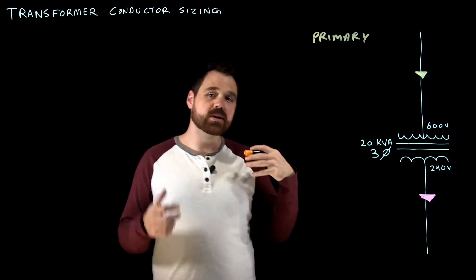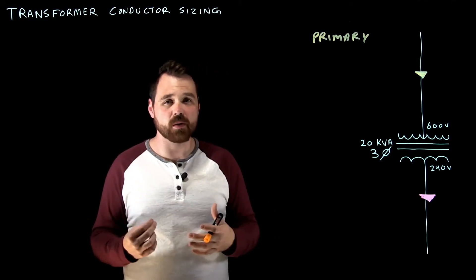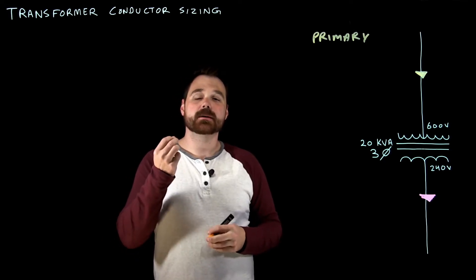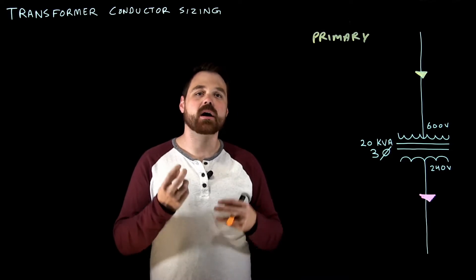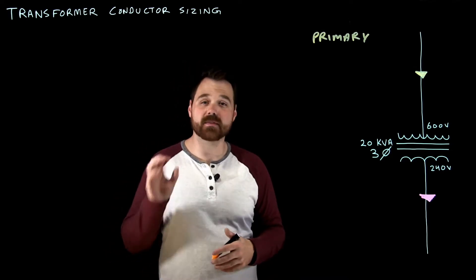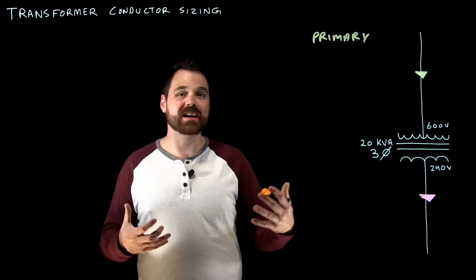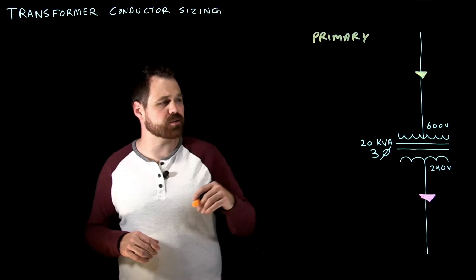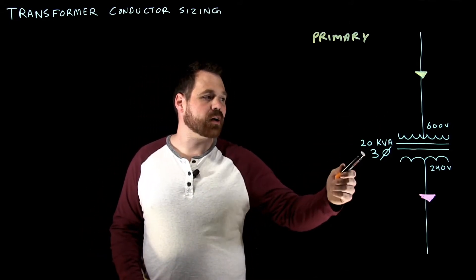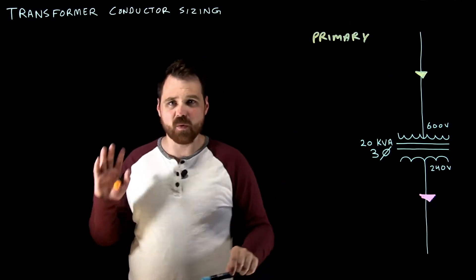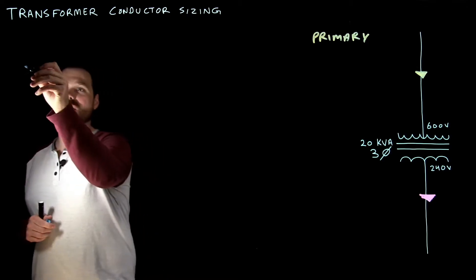So what the code book tells us is the conductor supplying the primary of the transformer needs to be rated for at least 125% of the rated primary current. So the required ampacity of our conductor is 125% the rating of the primary current. So we'll talk about this situation here. I've got a 20 kVA transformer, three phase 600 volts is my primary. Now we're going to calculate that rated current just by taking our formula.